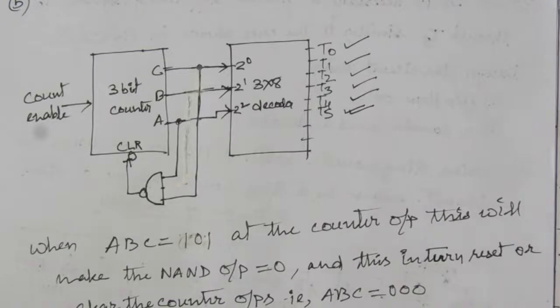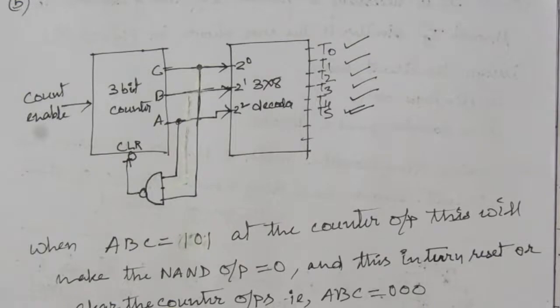This is the circuit design for 6 repeated timing signals as per the conditions given in the question. Thank you for watching. If you have any questions, please put them in the comment section below. Please like, share, and subscribe to my channel.